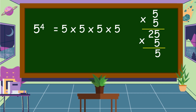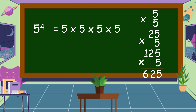5 times 2 is equal to 10, plus 2 is equal to 12. So 25 times 5 is equal to 125. And again, we're going to multiply 5. So 5 times 5 is equal to 25. 5 times 2 is 10, plus 2 is equal to 12. 5 times 1 is equal to 5, plus 1 is equal to 6. So the value of 5 to the fourth is equal to 625.